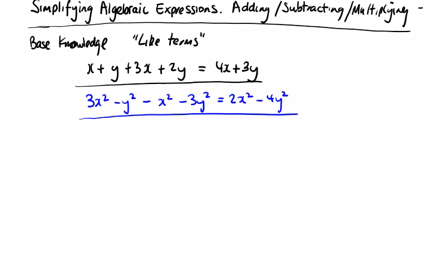In this lesson we're going to look at simplifying algebraic expressions with adding, subtracting and multiplying. The base knowledge you require is what's called like terms — terms that are alike, that have the same power. When we don't see a power, it's to the power of one. You can see all these terms have the same power.